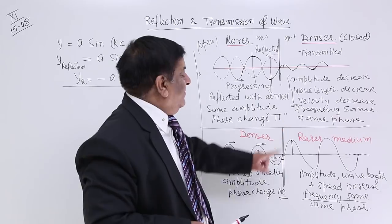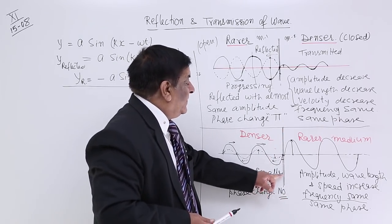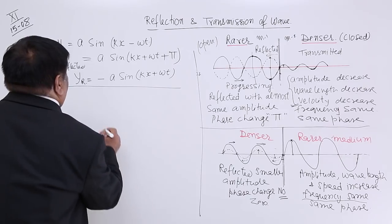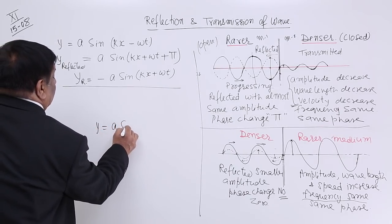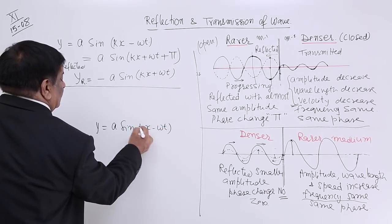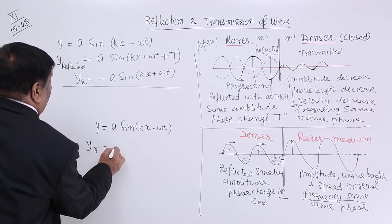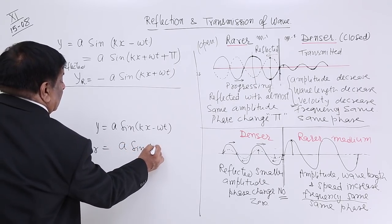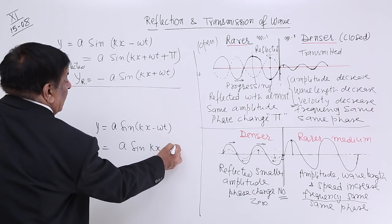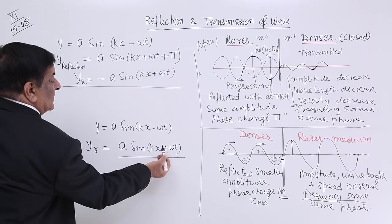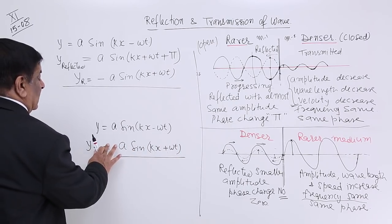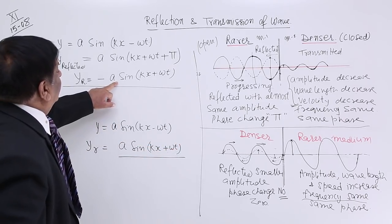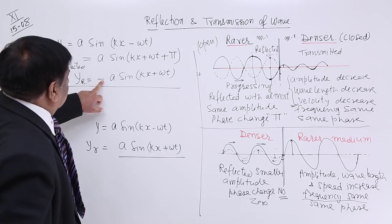For the reflected wave from denser to rarer: there is a phase change of 1π in rarer-to-denser, but there is no phase change (0) in denser-to-rarer. The equation of the progressive wave is y = A sin(kx − ωt). The reflected wave only has its direction reversed: y_reflected = A sin(kx + ωt) — note there is no minus sign here. This versus −A sin(kx + ωt) is the key difference between the two cases.